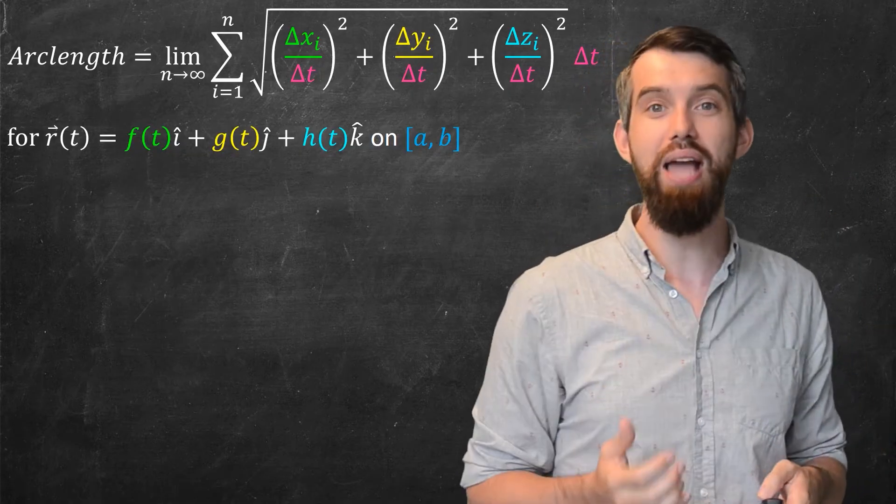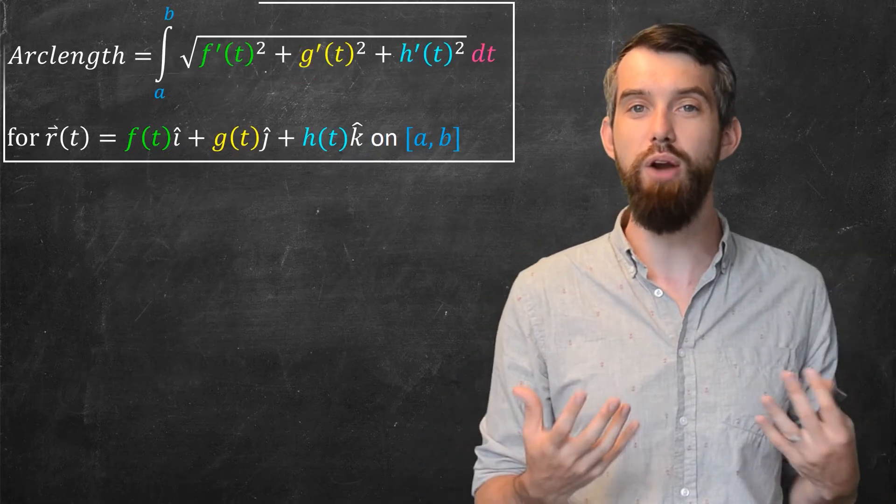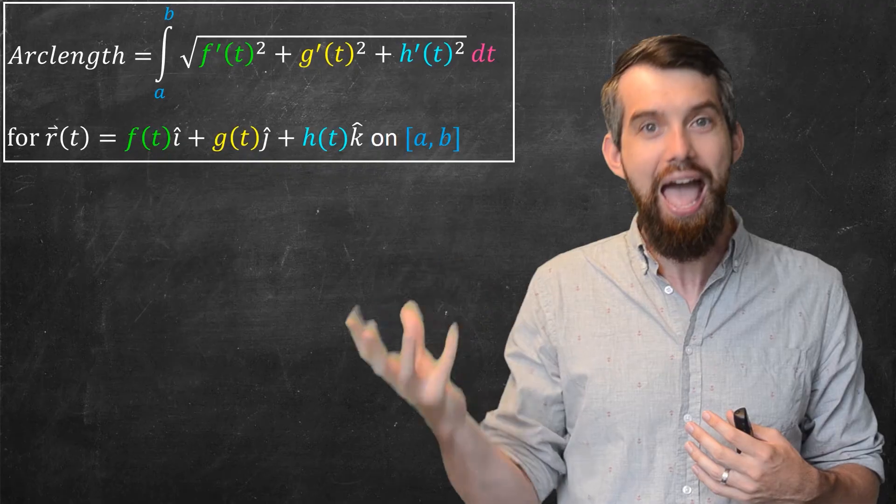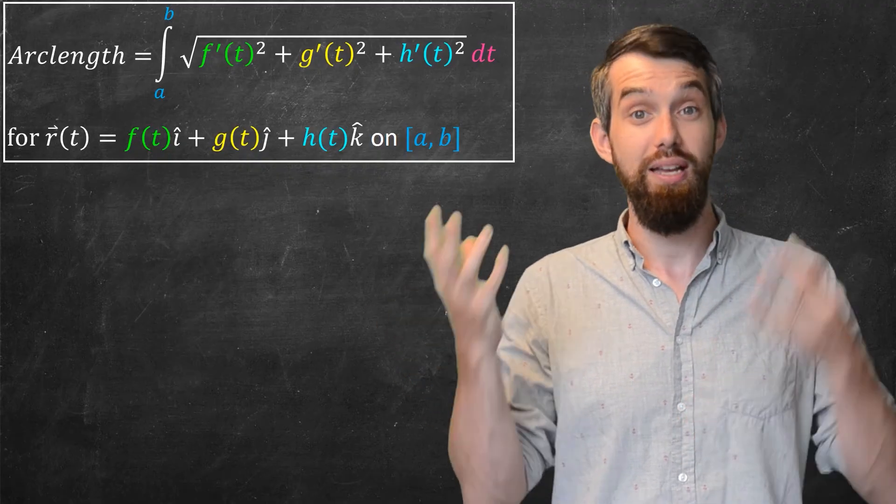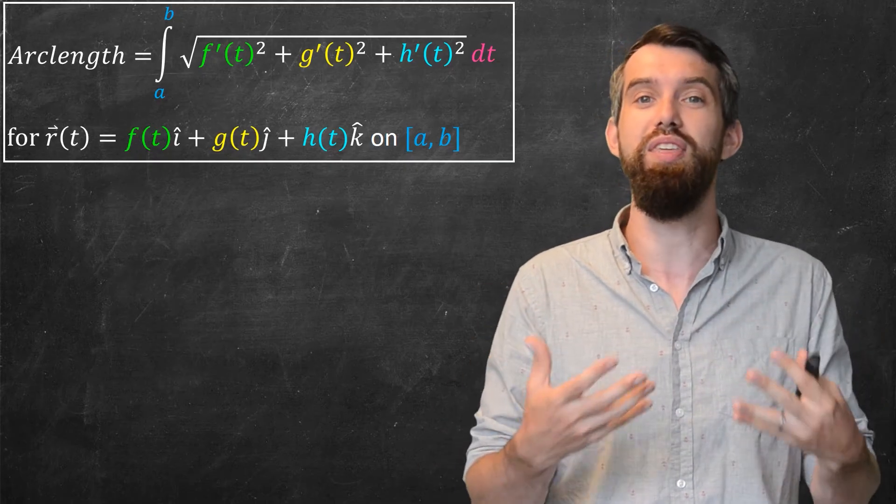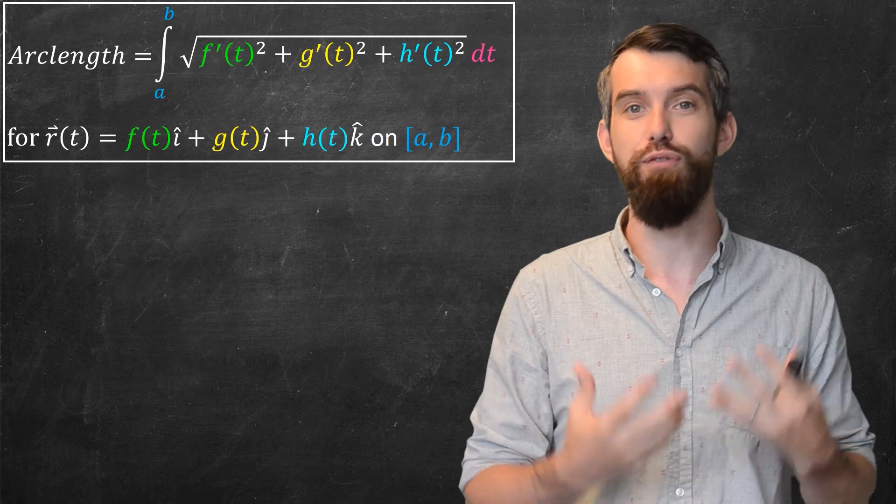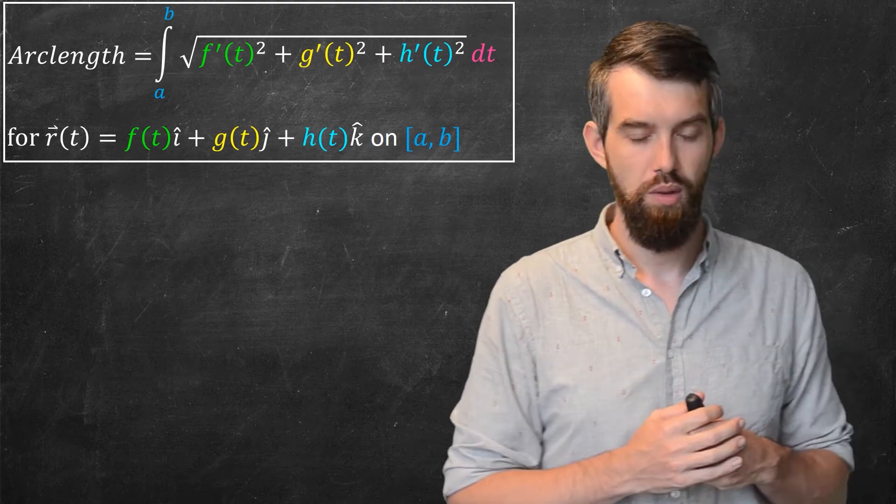Well, then when I go and I take my limit of a sum and replace it by an integral, what do I get is the square root of the derivative of f. That's what happened when the delta xi over delta t got replaced in the limit with the derivative of f with respect to t, or f prime. Likewise for y, likewise for z.